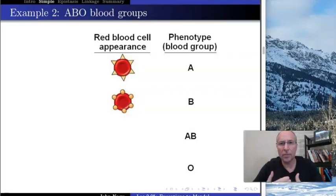Here's a second example of a common way in which Mendelian patterns fail. This is the ABO blood group in human beings and in mammals in general. As you probably know, your blood type can be A, B, AB, or O.